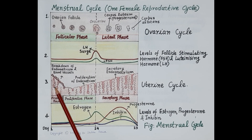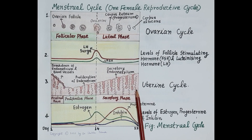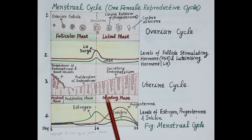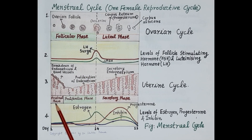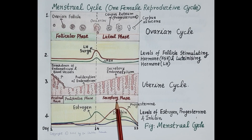Now let's talk about the uterine cycle. The uterine cycle prepares the endometrium, that is the innermost lining of the uterus, to receive the fertilized egg. The follicular phase of the ovary corresponds to the menstrual phase and proliferative phase of the uterus, while the luteal phase of the ovary corresponds to the secretory phase of the uterine cycle.